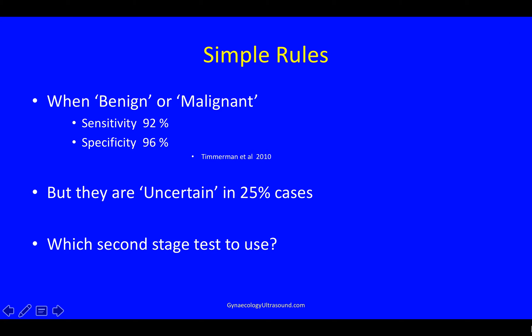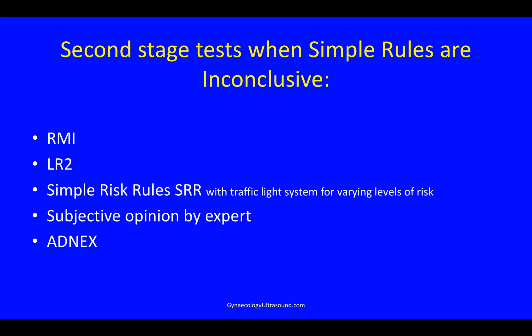How good is this test? When the test is conclusive — saying either benign or malignant — the sensitivity is 92% and the specificity 96%. But these rules are uncertain or inconclusive in a quarter of cases. So if it's inconclusive, what second stage test should you use? You could use risk of malignancy index, but we know it's not very accurate. LR2 is another one of IOTA's risk models — it's very good but slightly complicated. Simple risk rules with a traffic light system for varying levels of risk — this is very good. Subjective opinion by expert, though not every clinic has an expert. Or ADNEX, which I'd like to talk about next.